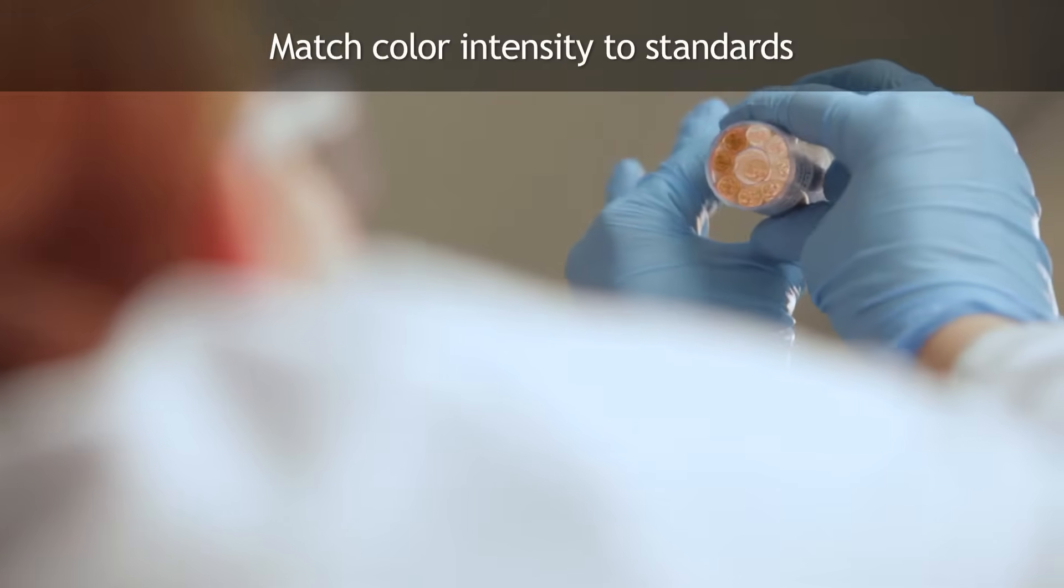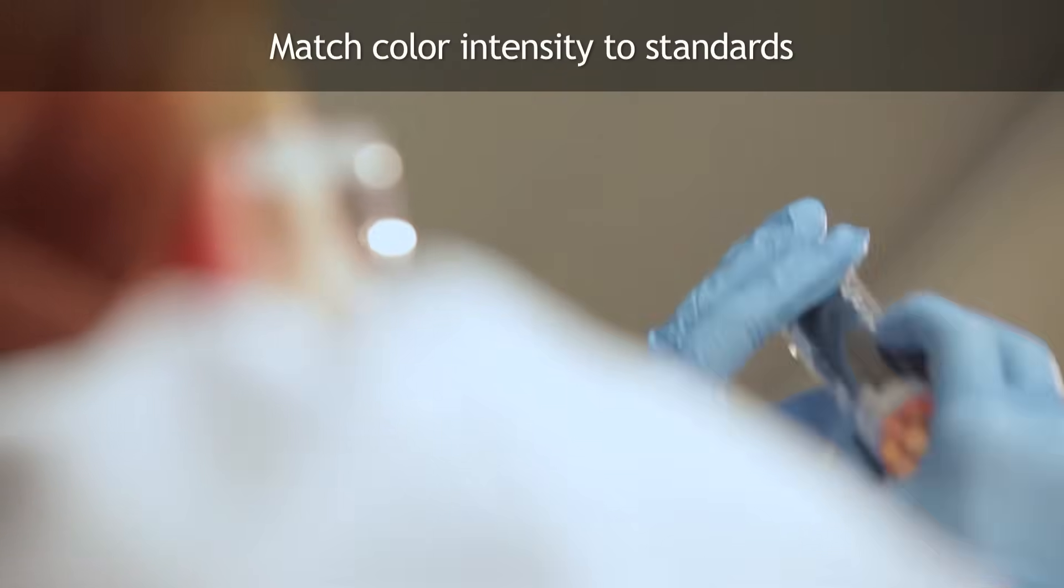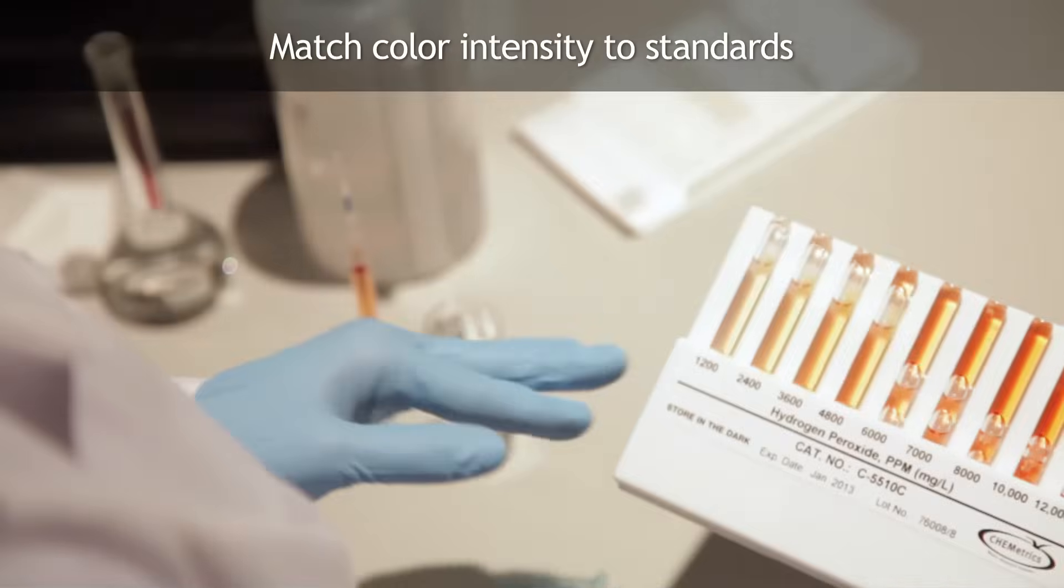Direct the top of the comparator up toward a source of light while viewing from the bottom. Rotate the comparator until the color standard below the ampule shows the closest match. Concentration values are printed along the bottom edge of the comparator label.